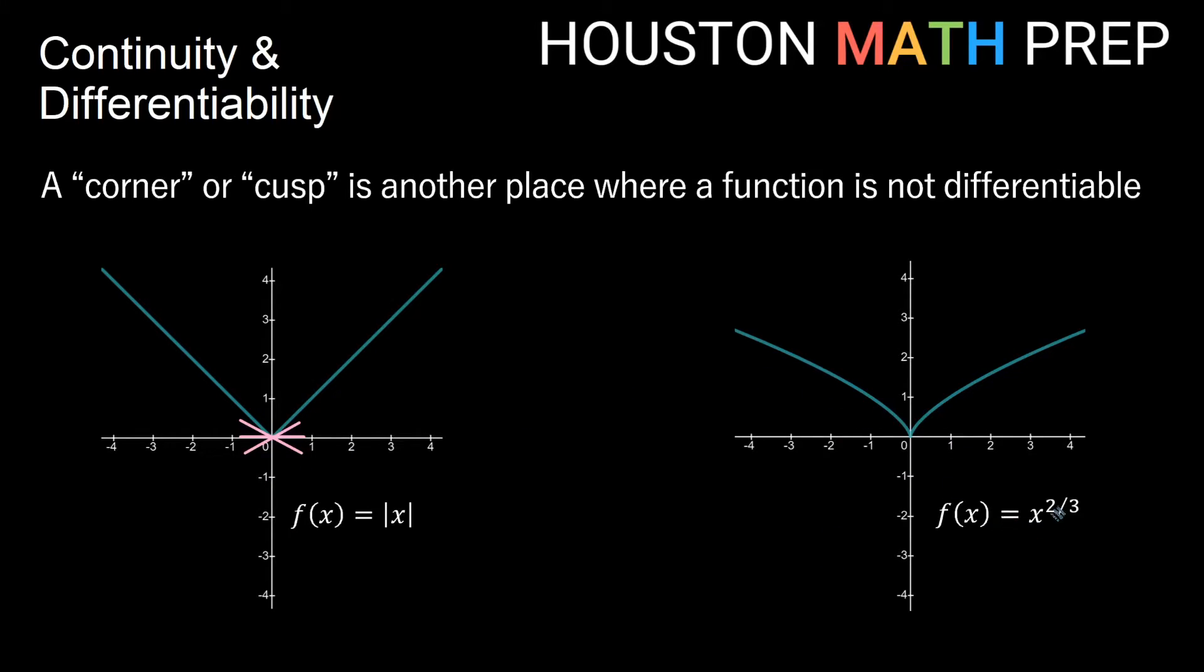Same thing with our cusp over here, y equals x to the two-thirds power. You can think about there are many ways to draw a tangent line through this sharp point here at our cusp. And so we will not have a unique derivative here. So these are not differentiable at zero.